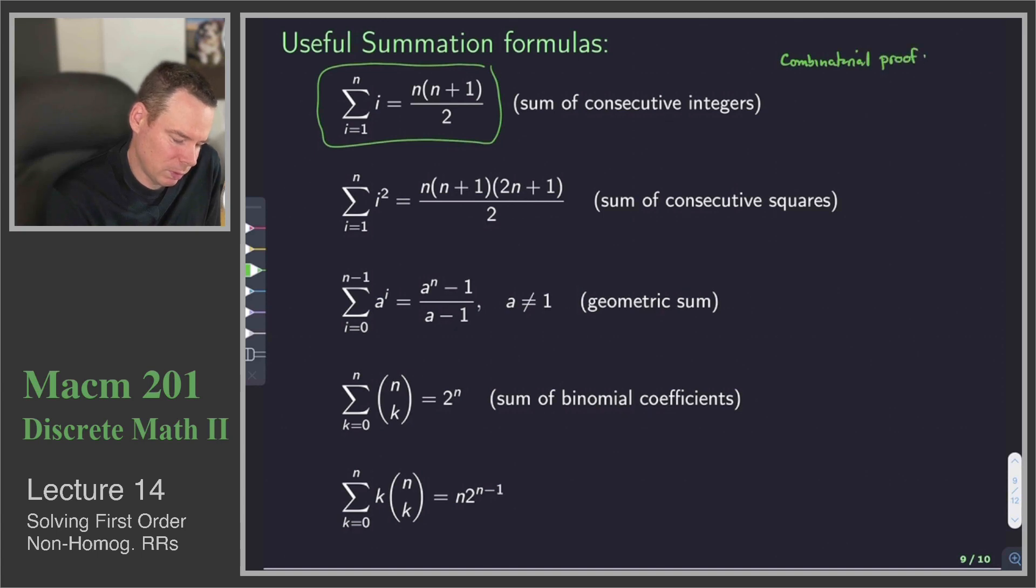There's a combinatorial proof. What is a combinatorial proof? Just find some object that we want to count and show that the number of objects can be counted one way to get the left-hand side, and count them in a different way to get the right-hand side.